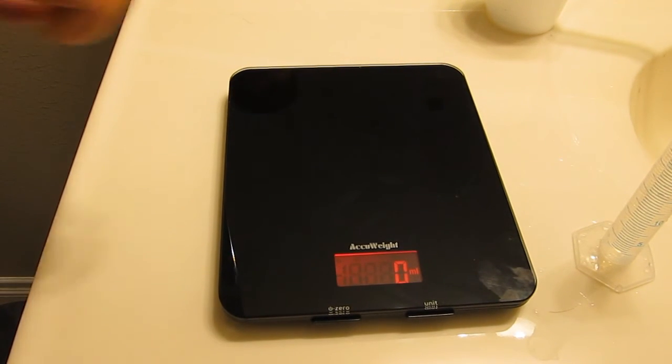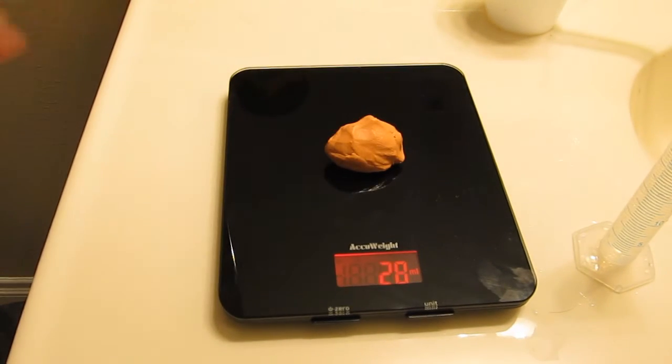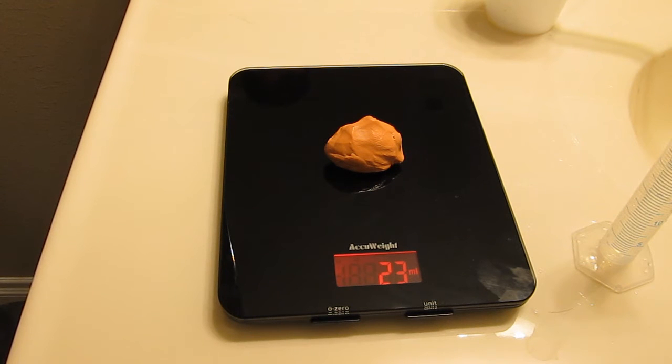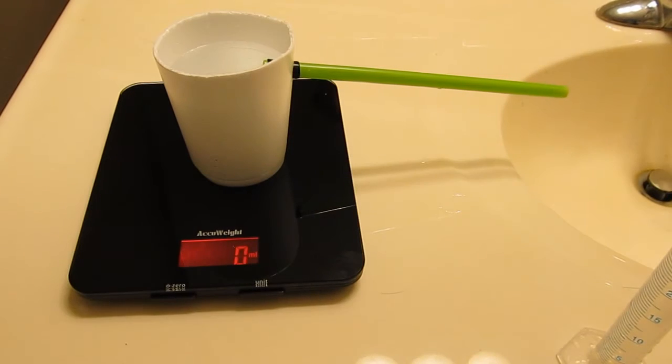So first, let's get the weight of the clay. When weighed on the scale, the clay weighs the same as 23 milliliters of water, or in other words, 23 grams. Note, the clay is denser than water.